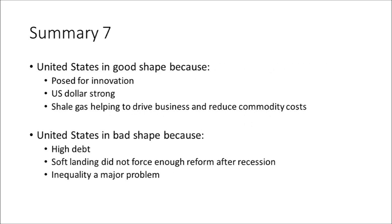As for the United States, mentioned in the final chapters, Sharma says the U.S. is in good shape because it's poised for innovation, the dollar is strong, and shale gas is helping drive businesses and reduce commodity costs. He talks about people drifting investments away from innovation and into commodity markets, which drives up the cost of oil, preventing manufacturing companies from growing. The commodity broker drives up oil prices, so manufacturing companies spend more on oil and less money goes into research and development — not a good way to drive an economy.